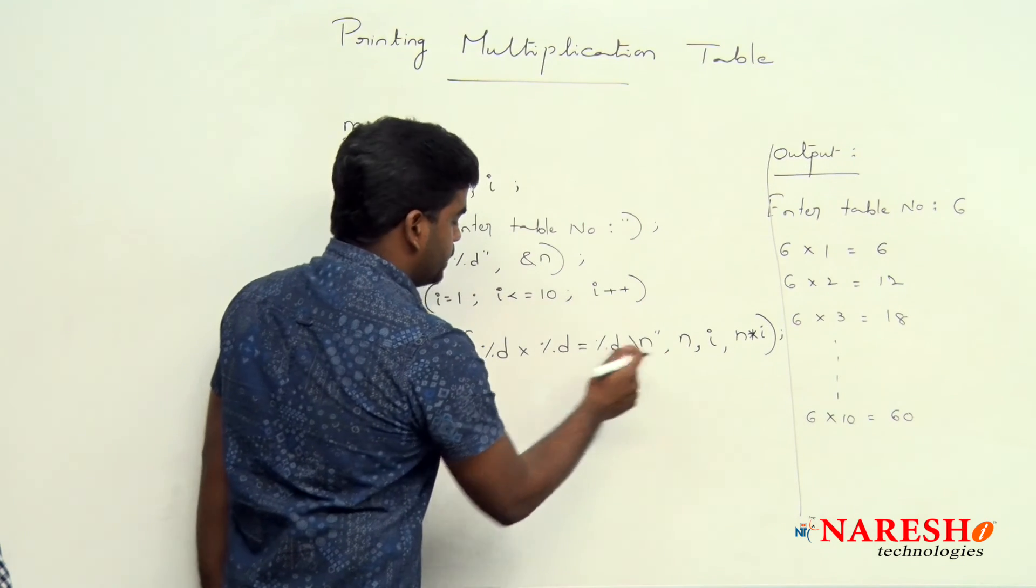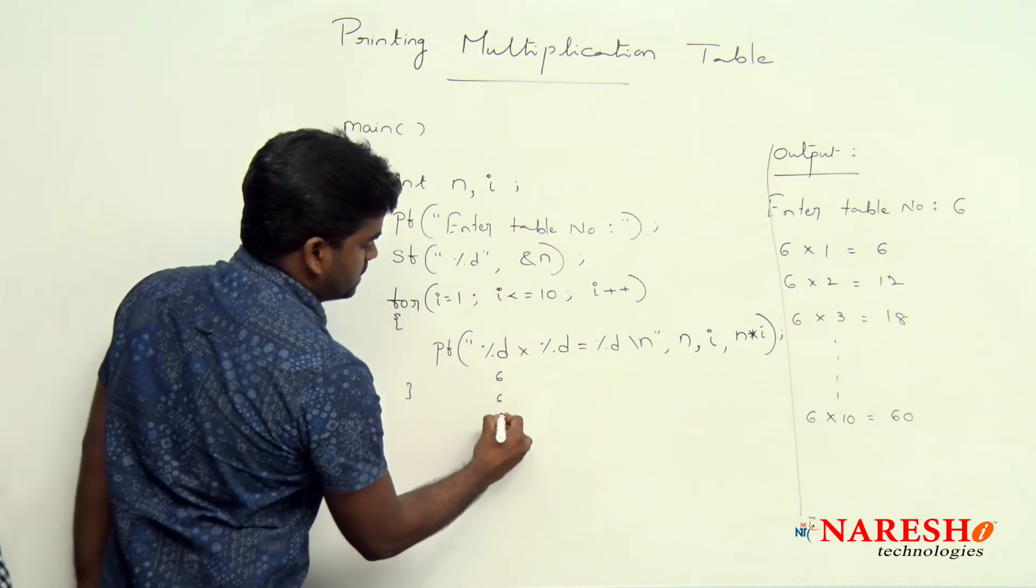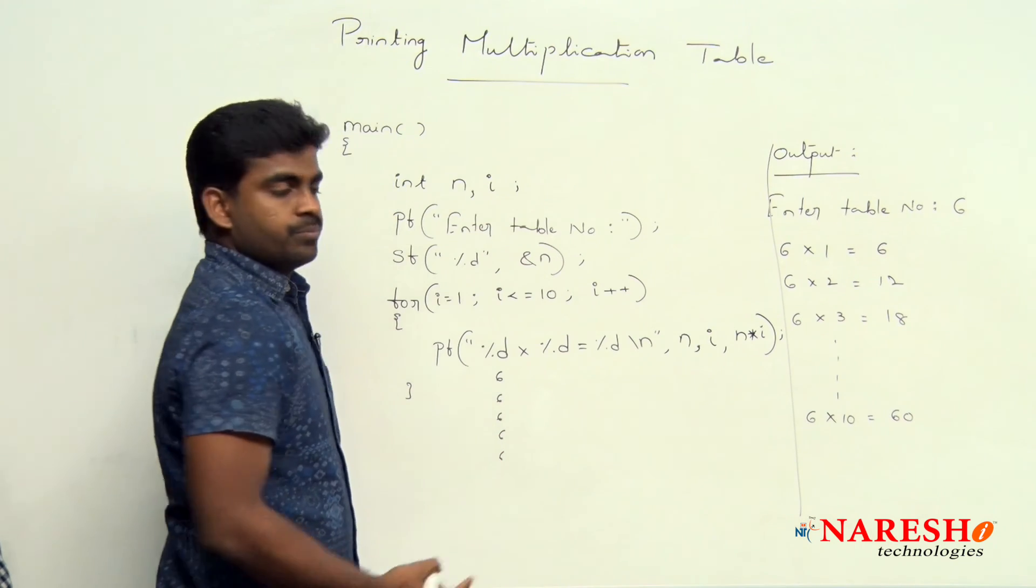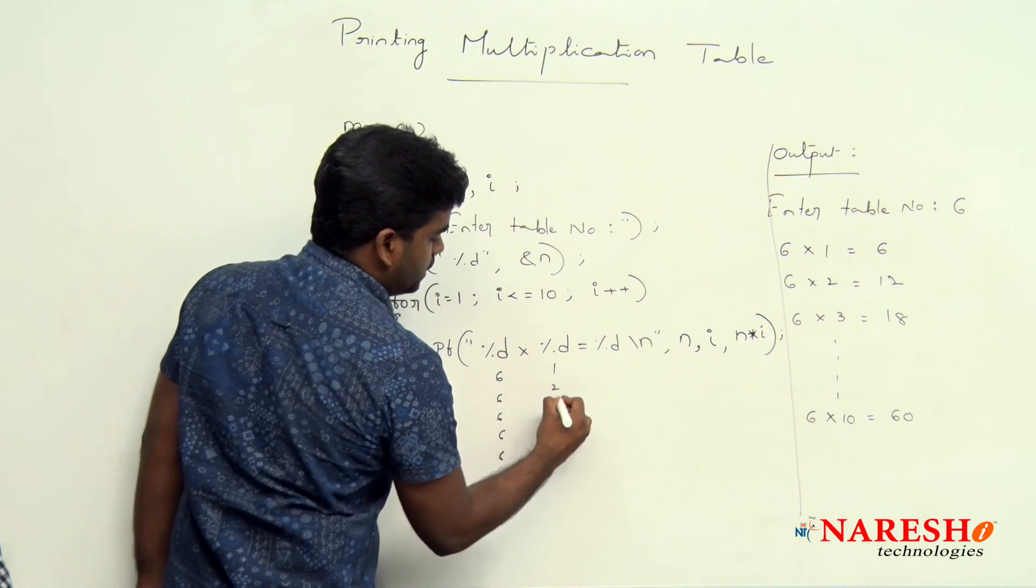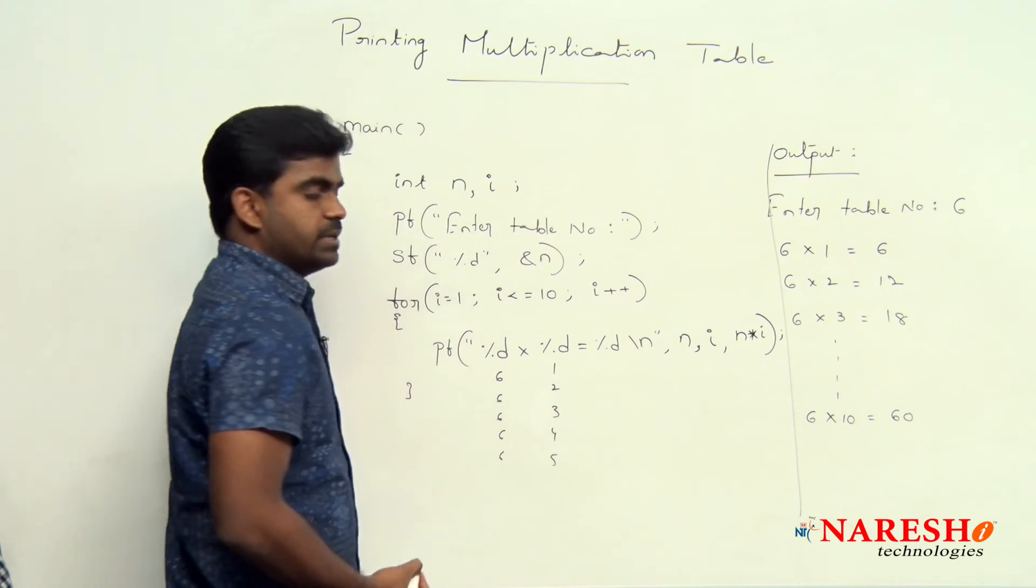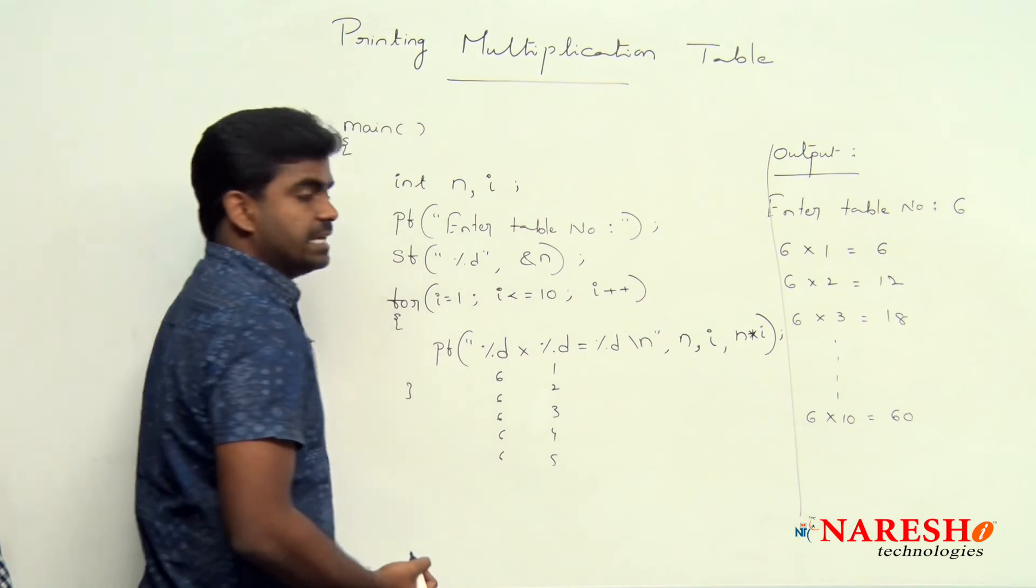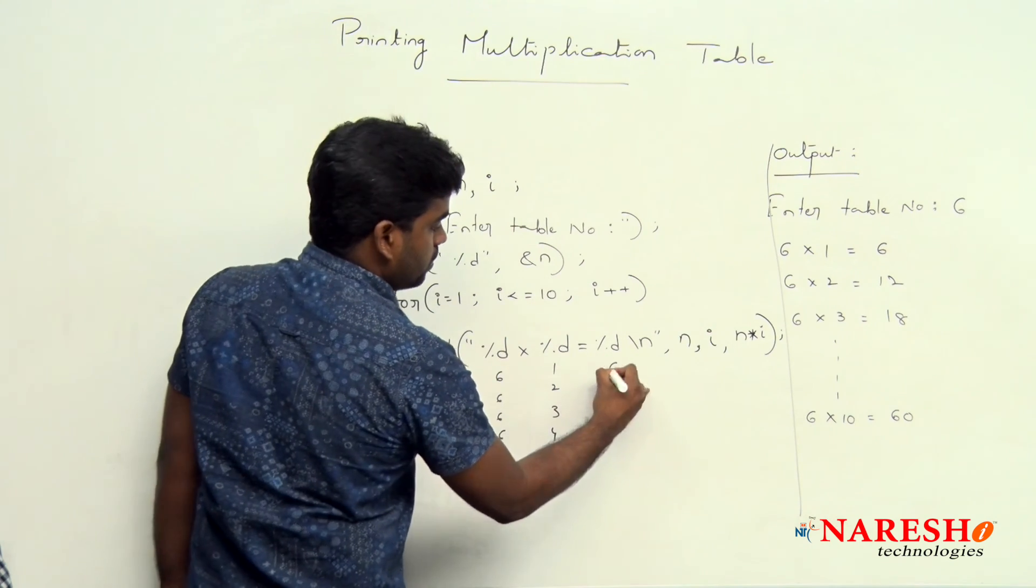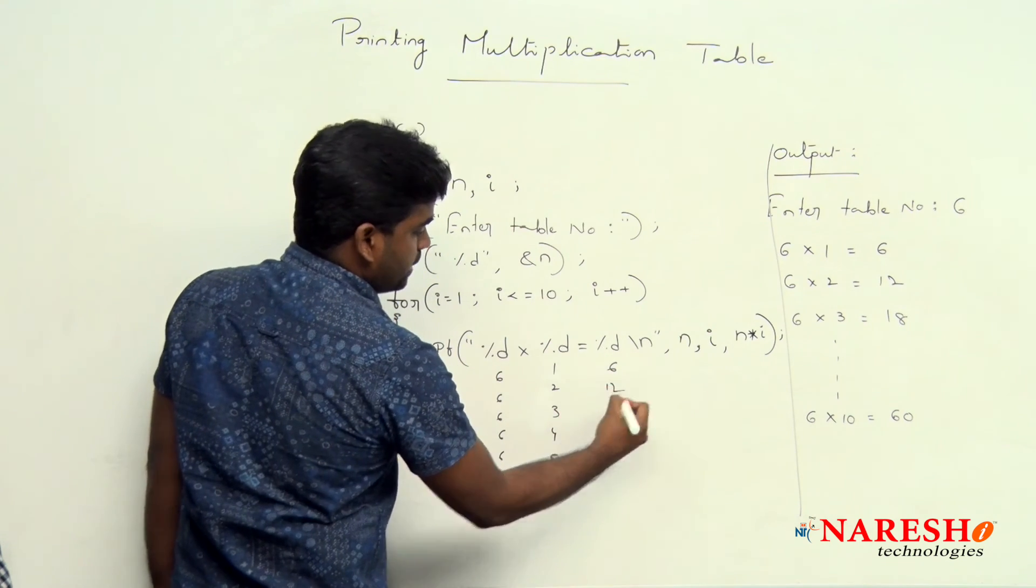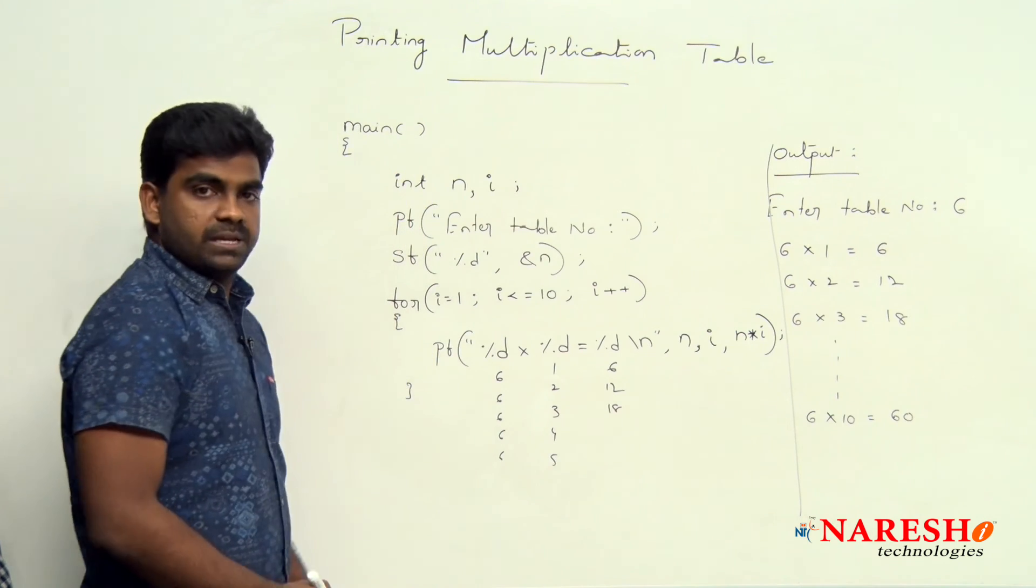So that n value it will display every time 6, 10 times it will display. And here i value 1, 2, 3, 4 like this it will display. And next one, n multiplied with i: 6 into 1 is 6, 6 into 2 is 12, 6 into 3 is 18, like this it will display.